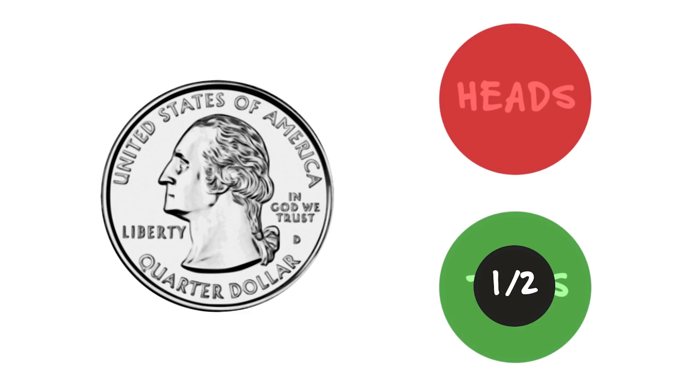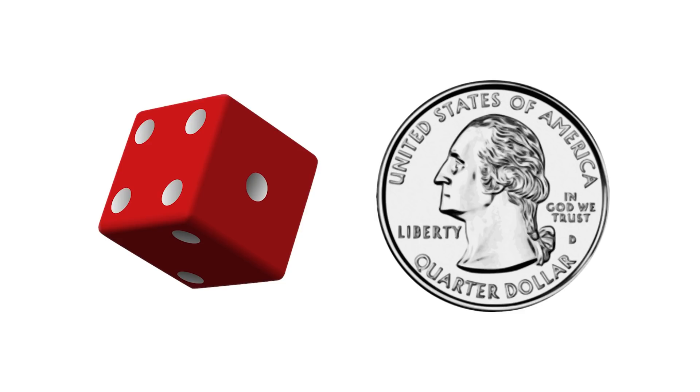In the case where I have eliminated less uncertainty, produced less information, it's been the case where the probability of the event was smaller. Die: smaller probability, more information conveyed. Coin: less information conveyed, less improbable. So information is inversely related to the probability of the event which excludes other possibilities.